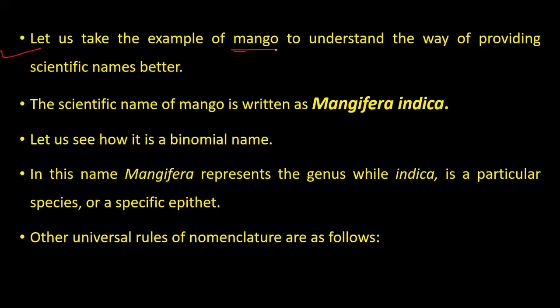Let us take the example of mango to understand scientific naming. Mango has many varieties — Alphonso, Chausa, Langda, Dasehri — but these are all sub-varieties. Mango itself is a species, and the scientific name for any mango is Mangifera indica.